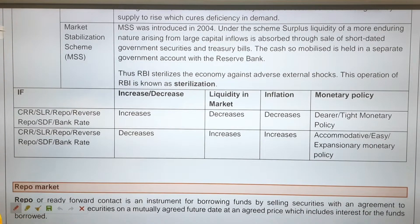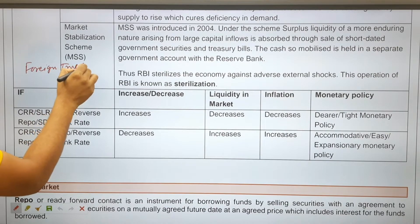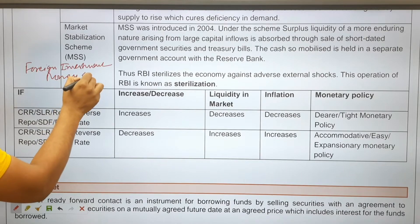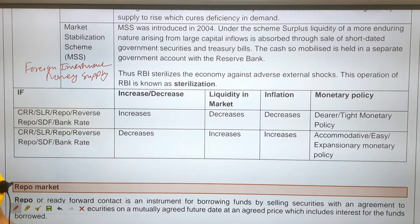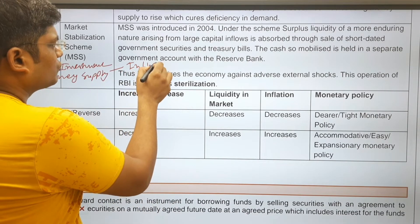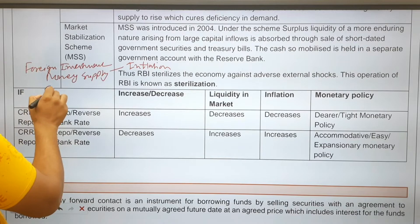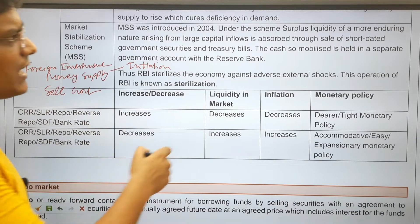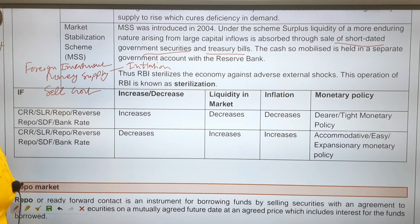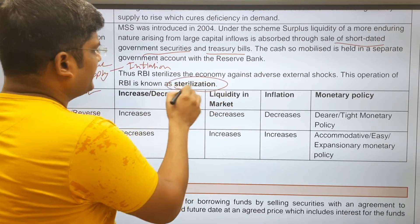Market Stabilization Scheme (MSS): When foreign investments come into India, money supply increases, demand rises, and inflation increases. To counter this external shock, RBI sells short-dated government securities and treasury bills to absorb the excess liquidity. This process is known as RBI sterilization.